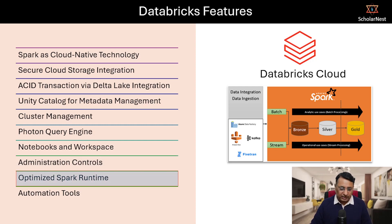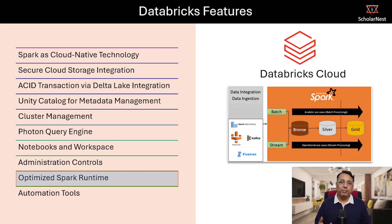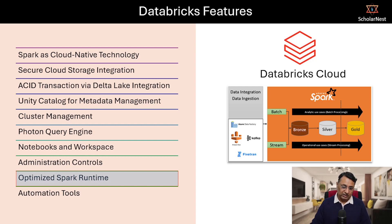Databricks claims they take vanilla Apache Spark, implement some optimizations, and then bring it into the Databricks platform. So Apache Spark on Databricks is an optimized version — the same Spark code runs a little faster in Databricks because of the tuning and optimizations they have applied.